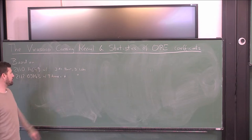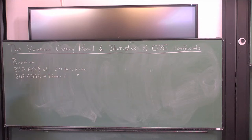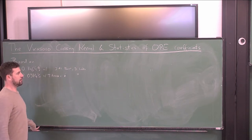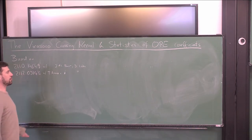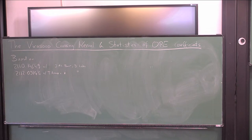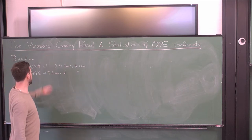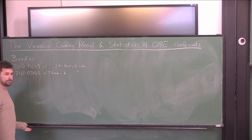With a bunch of people in Amsterdam: Jan de Boer, Diego Liska, who's a really good graduate student, and Tarek Anous, who's a postdoc there. What I'll be telling you about today is how to use crossing symmetry and modular invariance to constrain the dynamical information of conformal field theories, and in particular how to do that using a really nice technology based on the Virasoro crossing kernel.